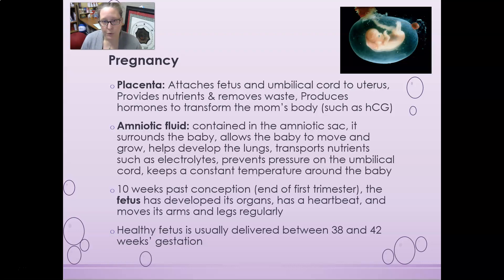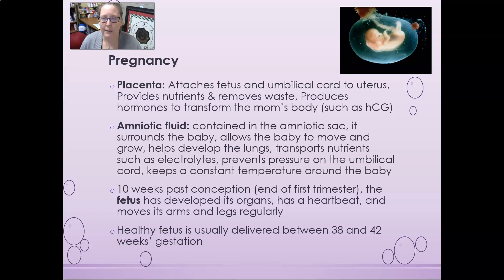The placenta attaches the fetus and the umbilical cord to the uterus, provides nutrients, removes waste, and produces hormones that transform the mom's body throughout the pregnancy, such as HCG. Amniotic fluid, contained in the amniotic sac, surrounds the baby and allows it to move and grow. It helps develop the lungs, transports nutrients such as electrolytes, prevents pressure on the umbilical cord, and keeps a constant temperature around the baby.